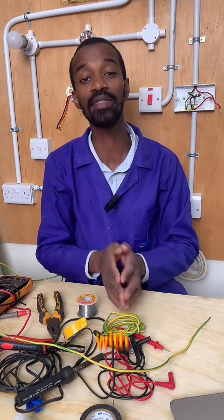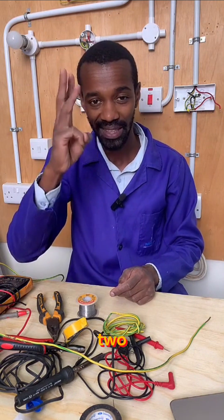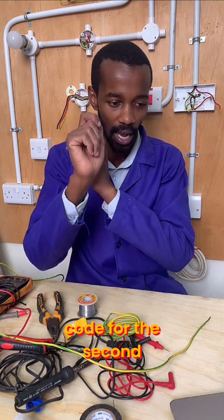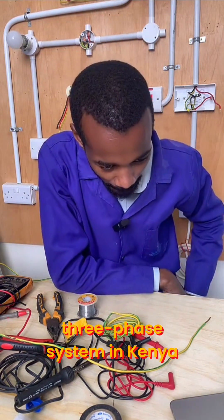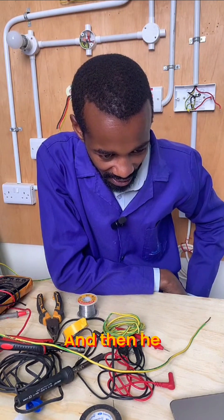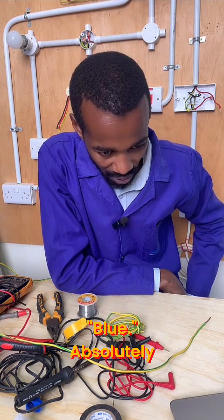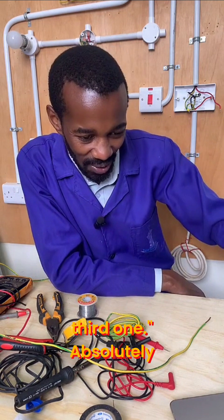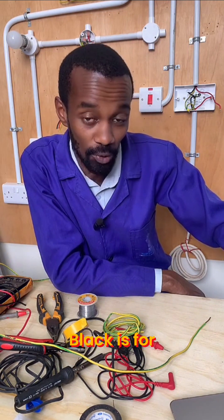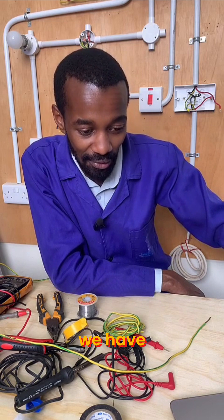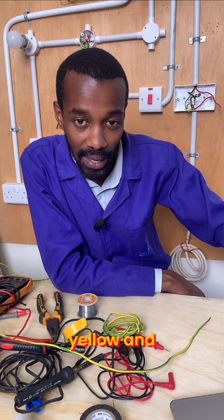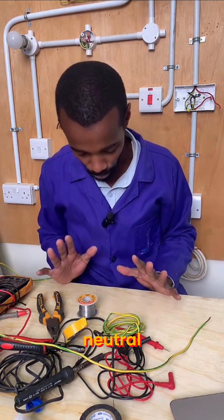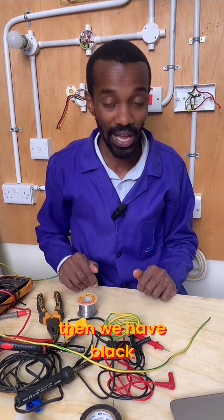Beginning with one, two, three — the first one is red, correct. What is the color code for the second phase in a three-phase system in Kenya? Yellow — that is from Francis. Blue — once says yellow is the second one, real man says blue is the third one. Absolutely. Black is for neutral. Here in Kenya we have red, yellow, and blue for three-phase, and black for neutral.